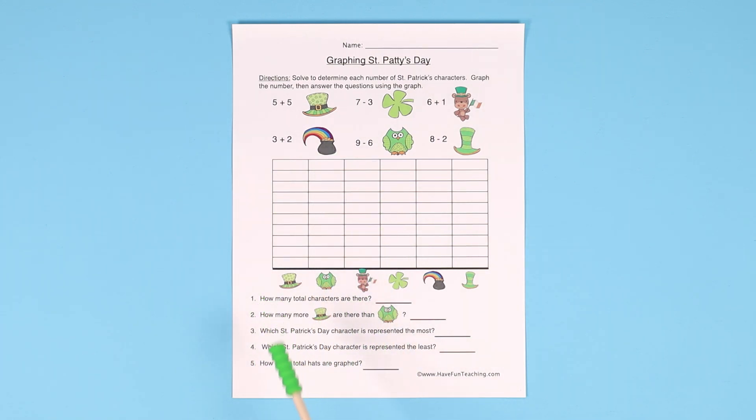Then we have 5 comprehension questions for this bar graph. So for the first one, how many total characters are there? What they would do is after they figure out the solution to each one of these problems and graph it, they have to add up the total number of each of these pictures.